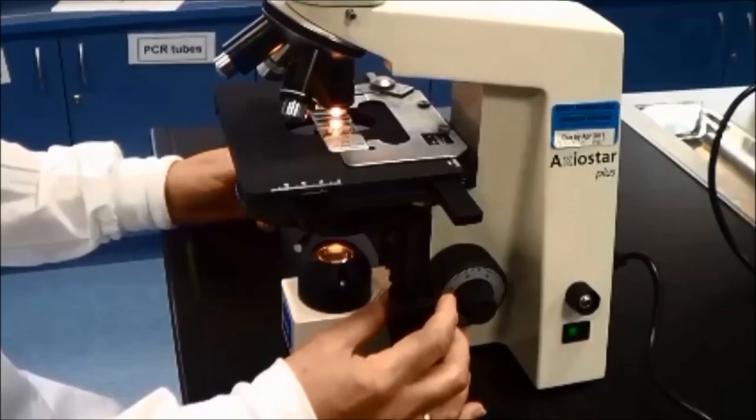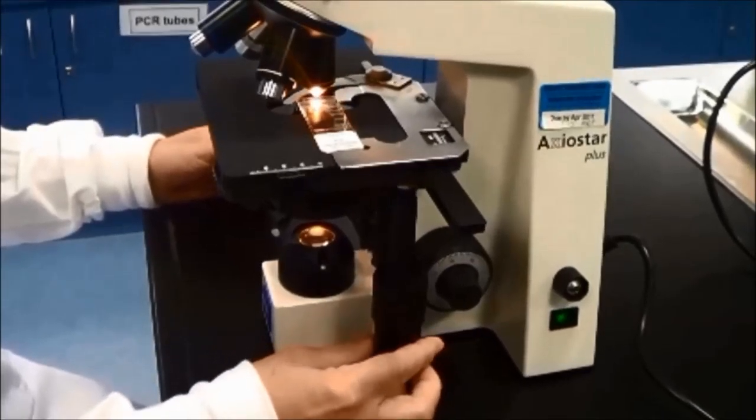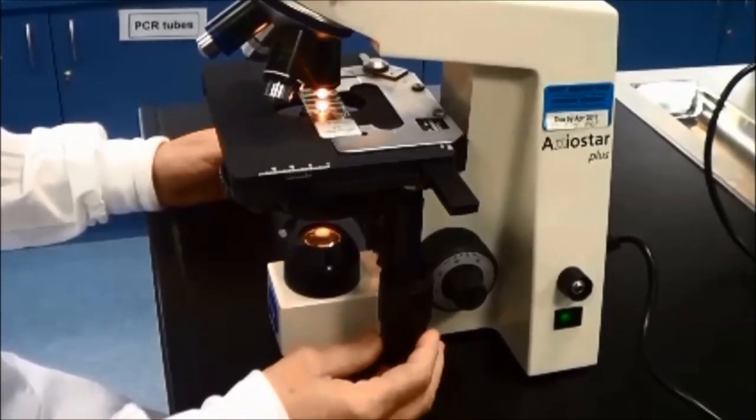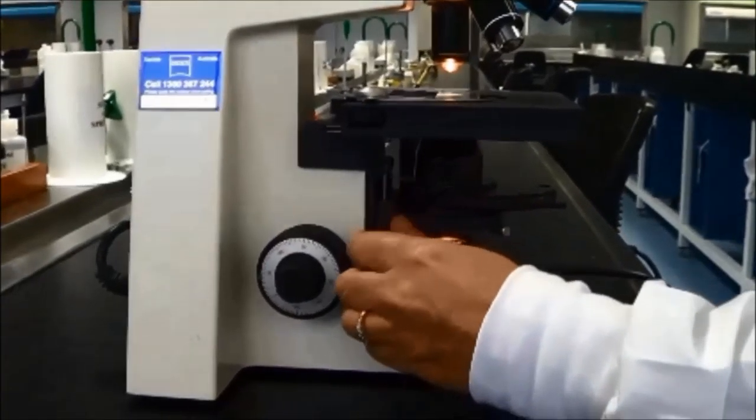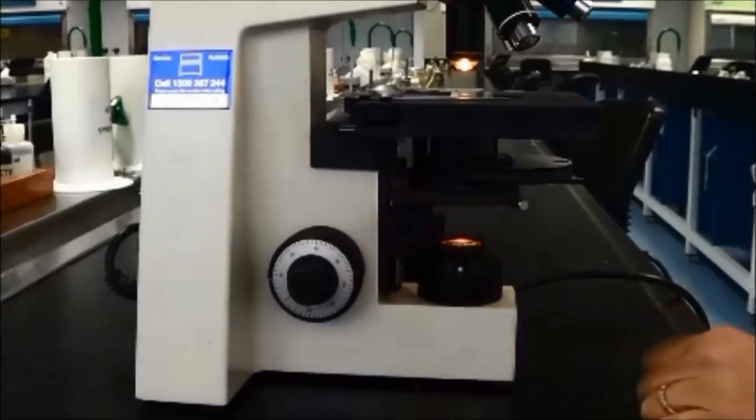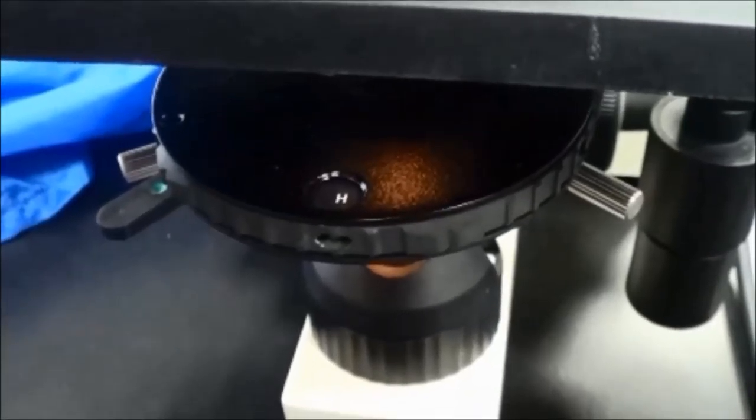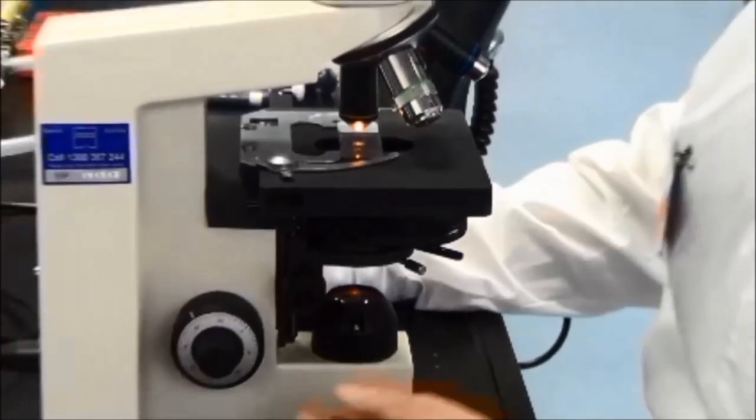Move the slide using the mechanical stage adjustment so the area of interest is in the field of view. Use the condenser adjustment knob on the left hand side of the microscope to move the condenser to the uppermost position. Ensure the condenser is showing H for brightfield.